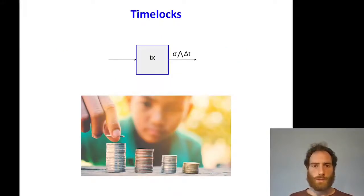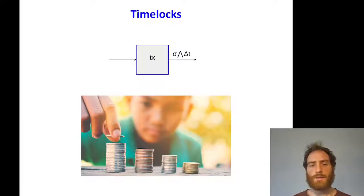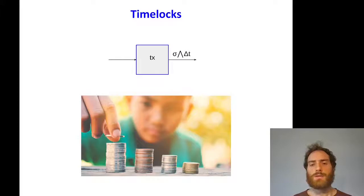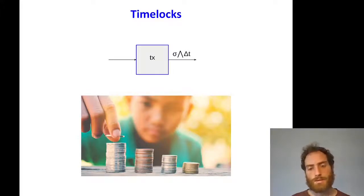First of all, let's introduce time-locks. This is a typical Bitcoin transaction with one input and one output, and in the output we can see that in order to spend the output, they need to present a signature sigma, and they have to wait for a time-lock. Essentially, they cannot publish a transaction before this time-lock expires.